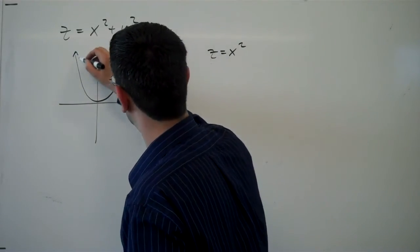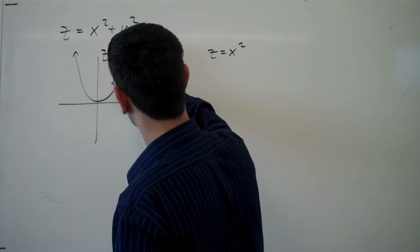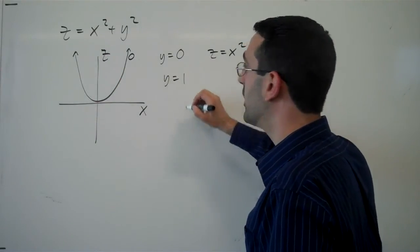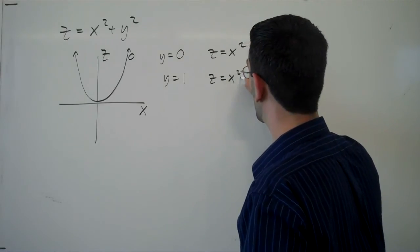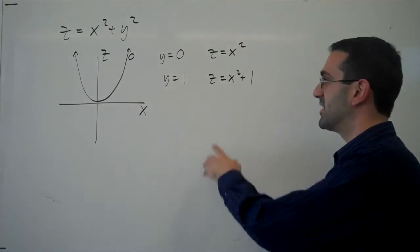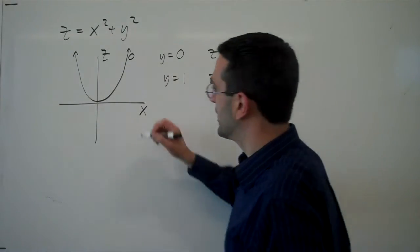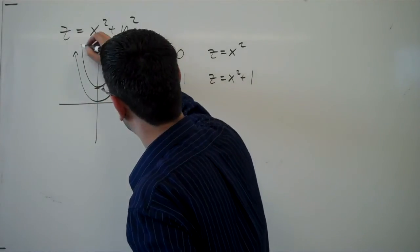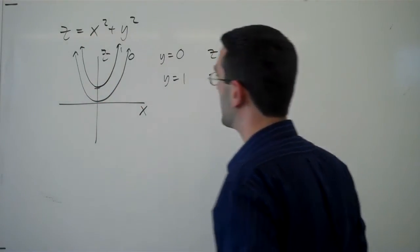And this is the parabola we get when y equals 0. Now if y was equal to 1, then we'd have z equals x squared plus 1, which is z equals x squared plus 1. And this is going to give us a shape that is shifted upwards. We're getting this shape when y is 1.